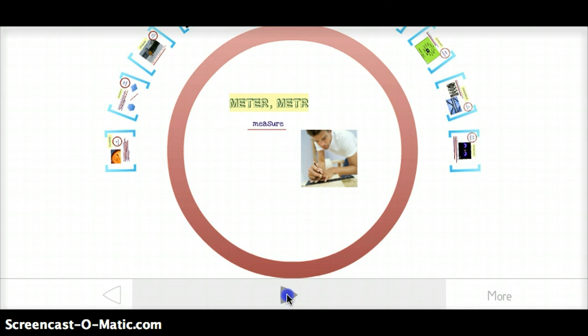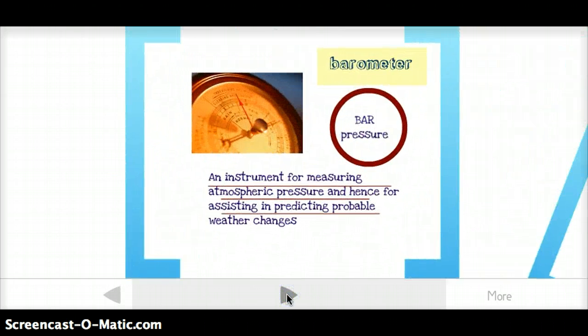And our first word is barometer. Barometer is made up of two roots. Bar means pressure, and meter of course means measure. So a barometer is an instrument for measuring atmospheric pressure, and for assisting in predicting probable weather changes. And you can see that barometer right there in the corner. Make sure you highlight the root bar as well.